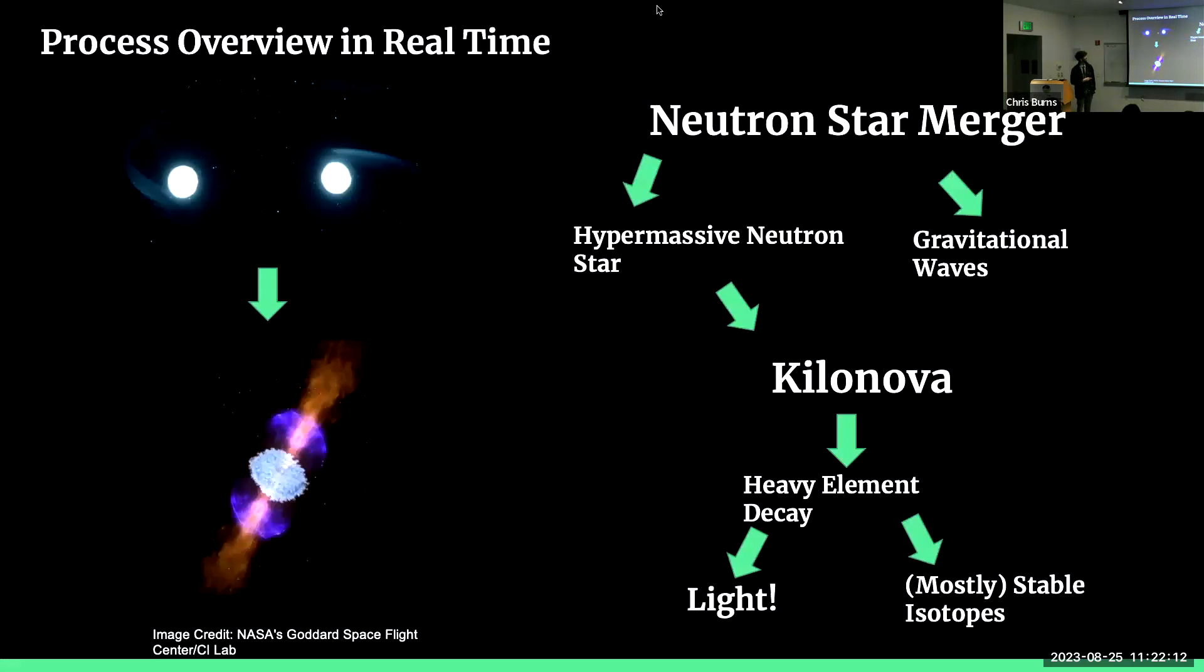So that's a nice video. But what does this process look like in real time, more broken down? We start off with a neutron star merger, and this creates two things. One, as they inspiral and then merge and ring down, they make gravitational waves. And then right after they merge, they make, for a very short period of time, a hypermassive neutron star. This hypermassive neutron star then informs the initial conditions, which define the Kilanova explosion that happens after. And then once this Kilanova happens, we have heavy element decay which creates light. And then after hours to weeks, we have these mostly stable isotopes.